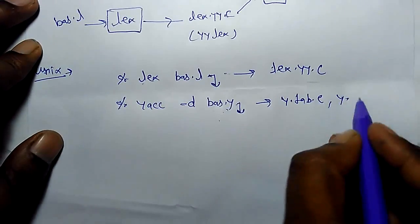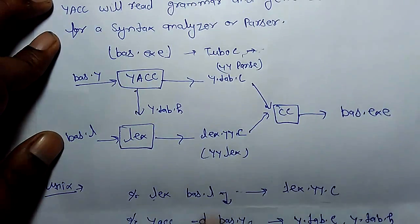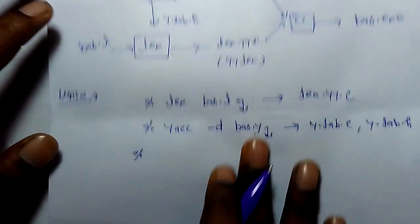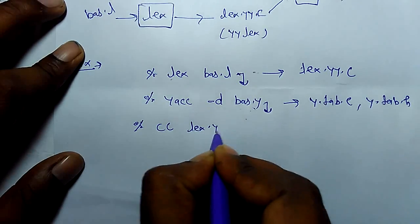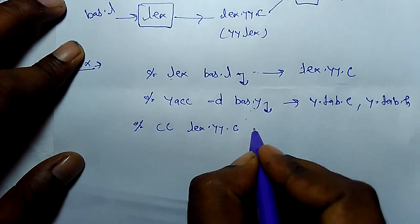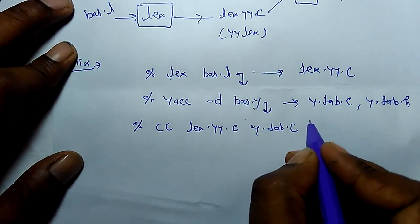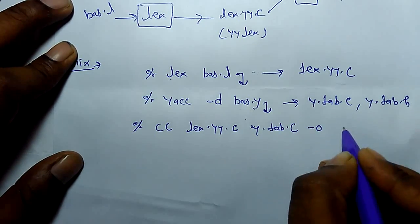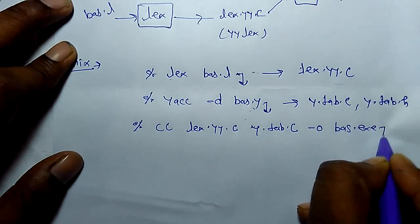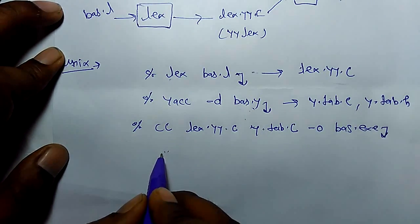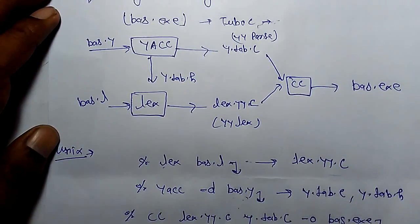Now link these two files: cc lex.yy.c and y.tab.c hyphen o and executable file we are going to generate bash.exe. The moment you will enter you will get bash.exe as executable file and that will be your compiler.